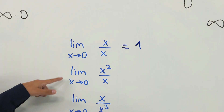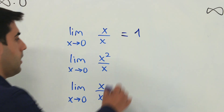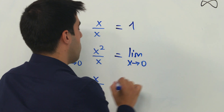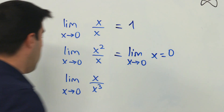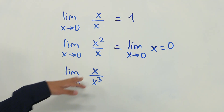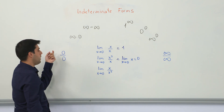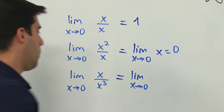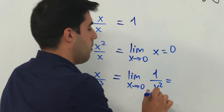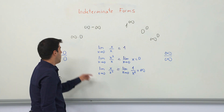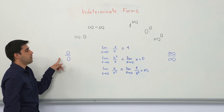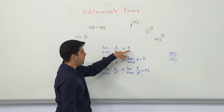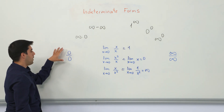Consider another case: the limit as x goes to 0 of x squared over x. This is again a 0 over 0 case. However, this reduces to the limit as x goes to 0 of x, which is 0. Or another example: the limit as x goes to 0 of x over x cubed — again 0 over 0 — but we can simplify this to the limit as x goes to 0 of 1 over x squared, which is 1 over 0, which is infinity. As you can see, the 0 over 0 indeterminate form can yield different results: here we have 1, 0, or infinity for the same form.